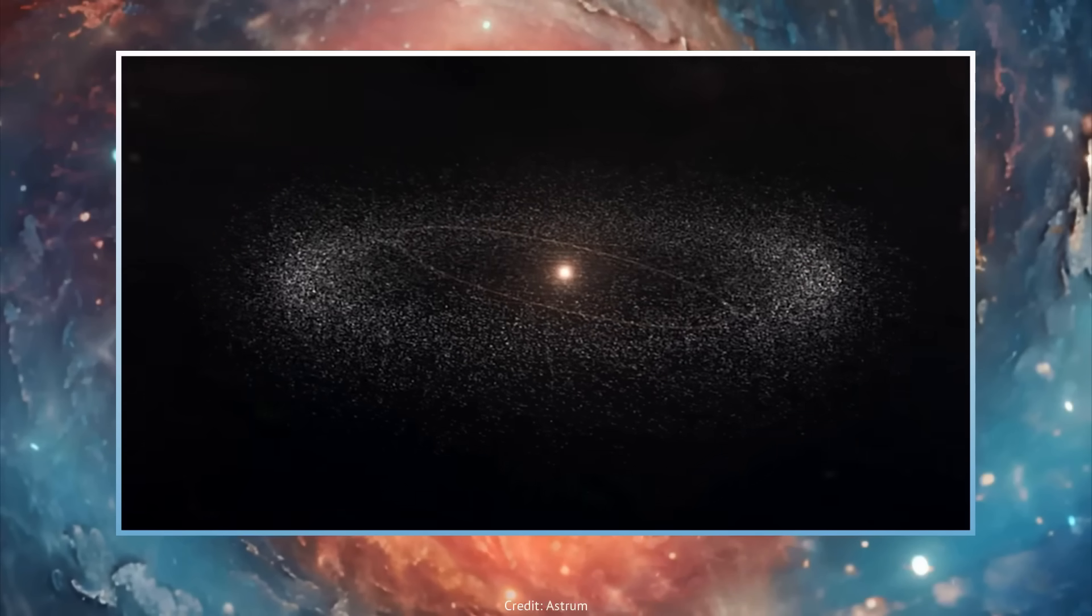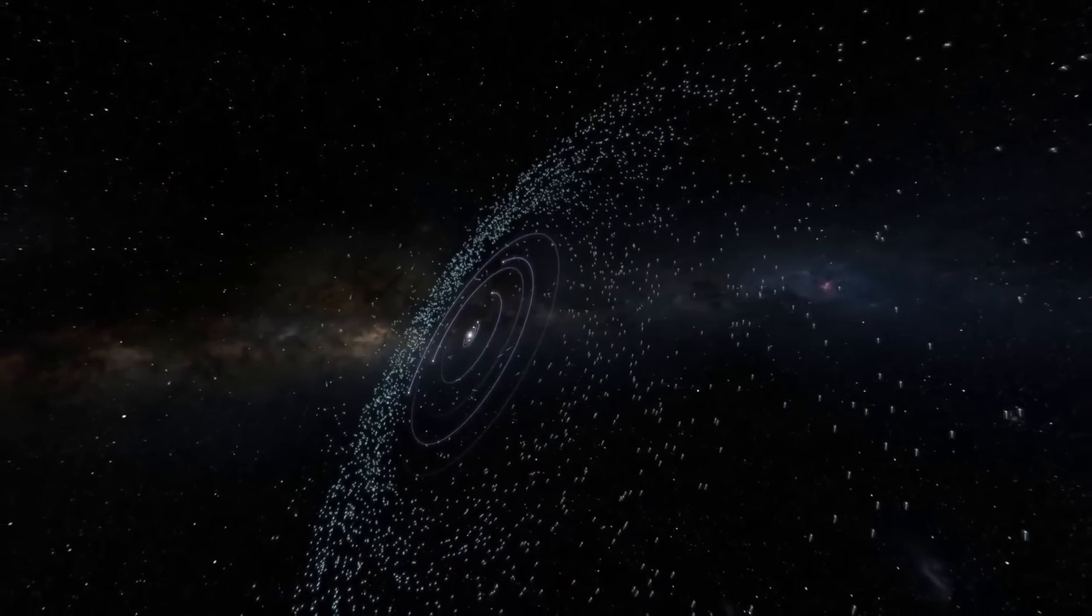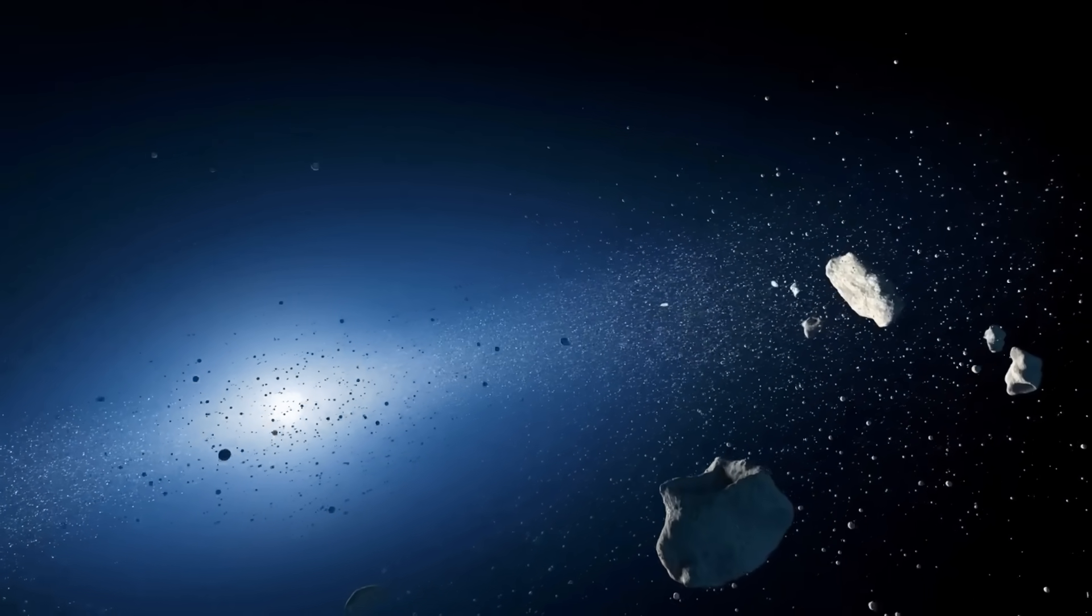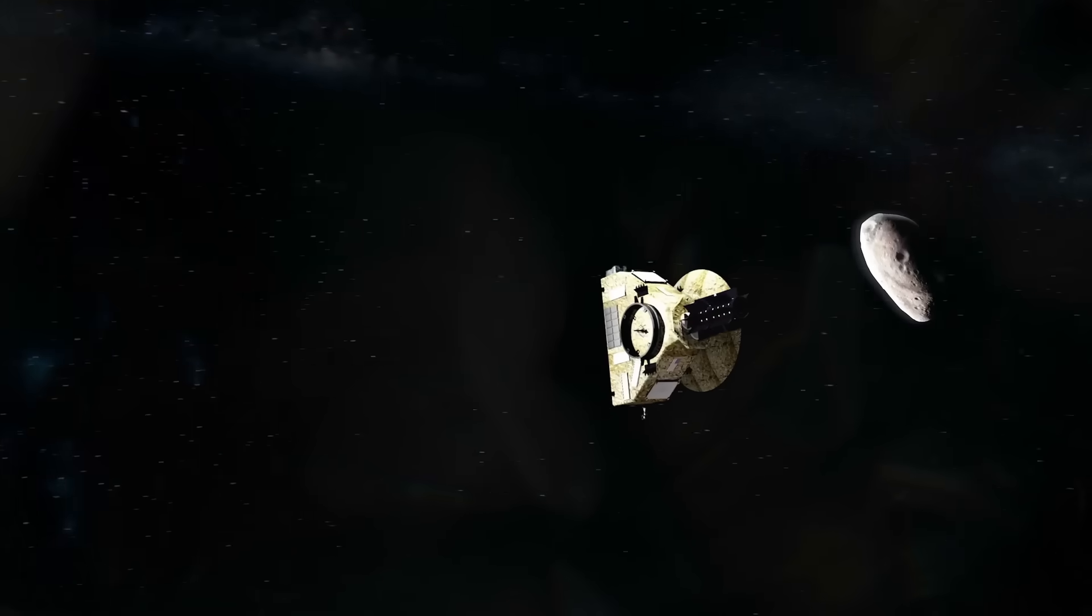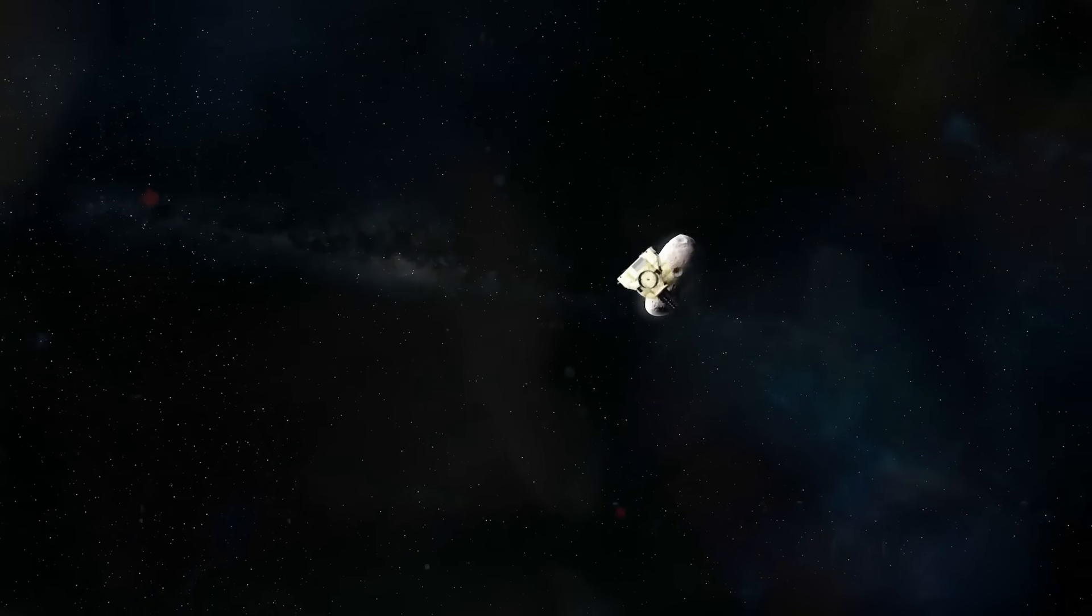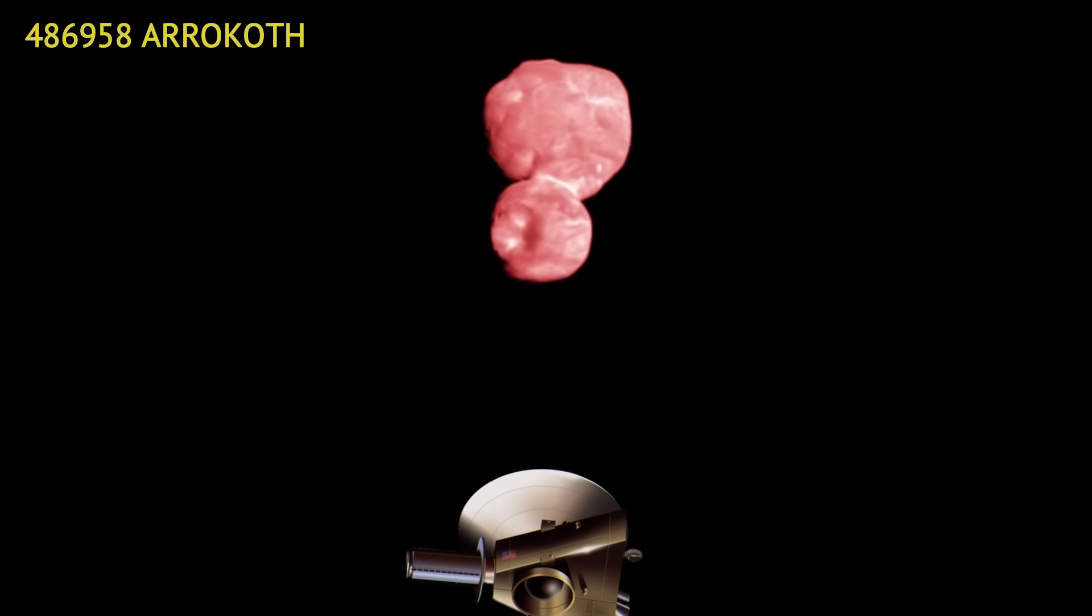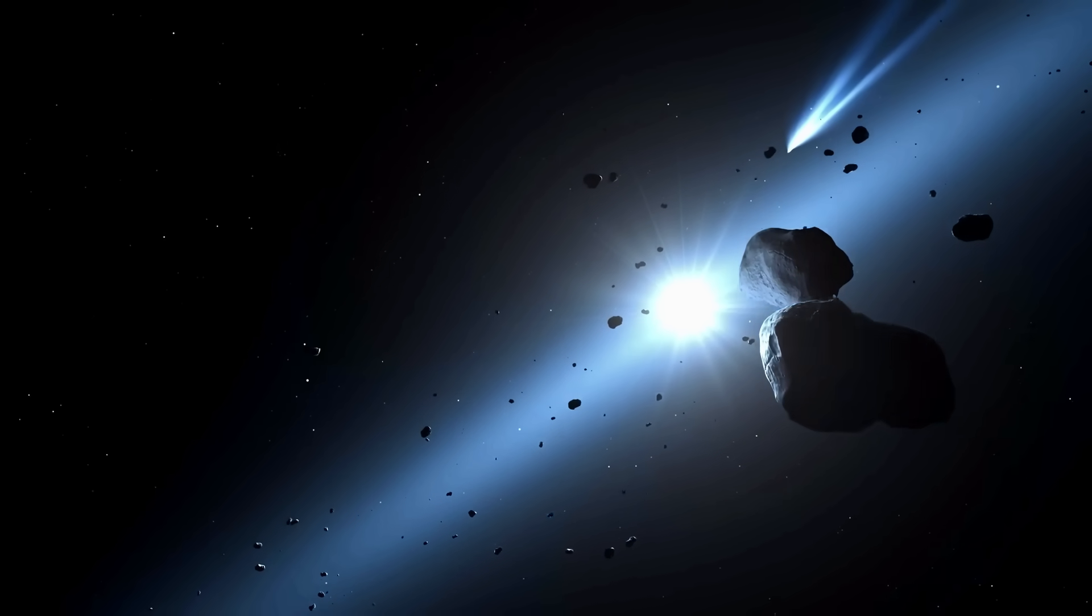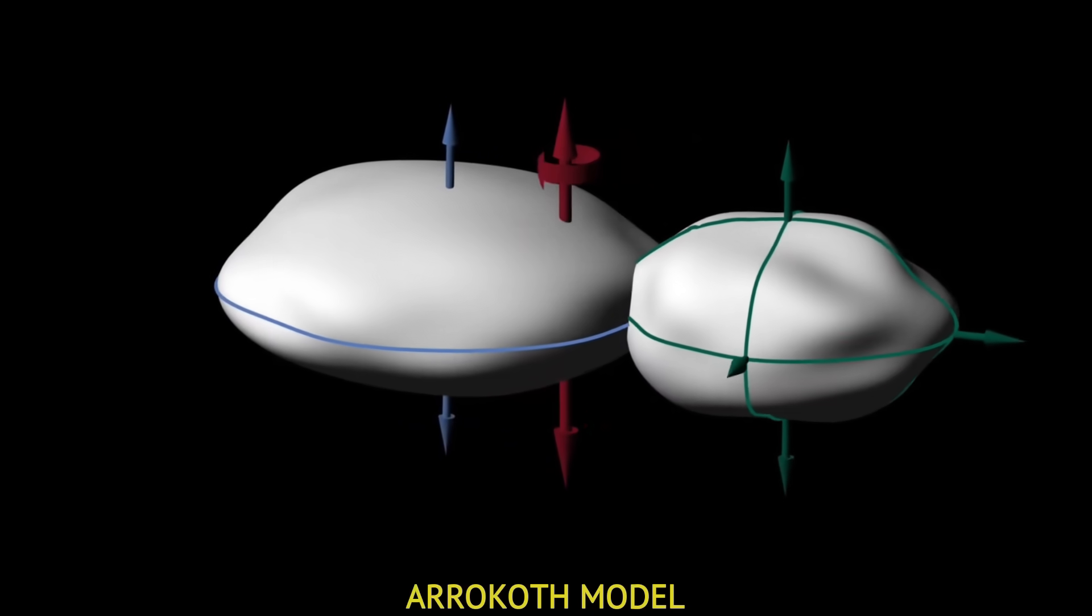This vast region, spanning a staggering 2 billion miles, is a frozen graveyard of the solar system's formation, littered with icy rocks, dwarf planets, and comets that have been preserved in a deep freeze for billions of years. In 2019, New Horizons performed the most distant flyby in history, zipping past Arrokoth, an oddly shaped object, resembling a flattened snowman. This strange, reddish KBO formed from two smaller bodies that gently merged, gave scientists a direct glimpse into the building blocks of planets.